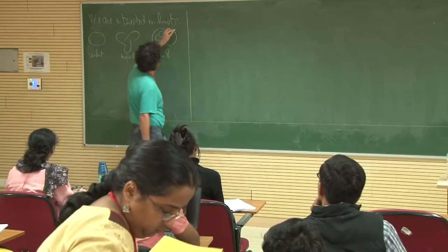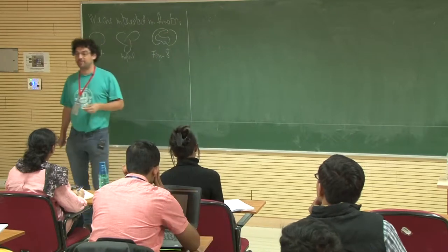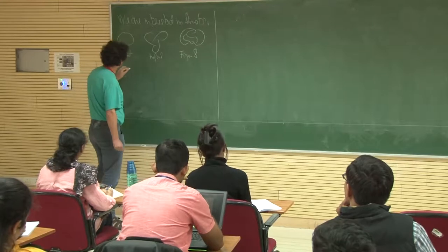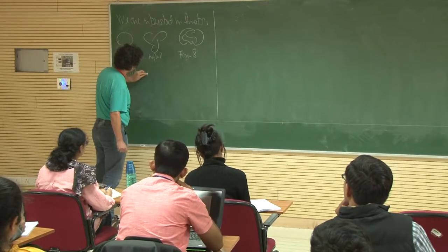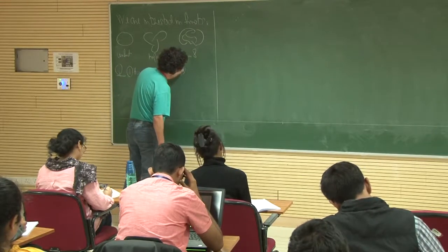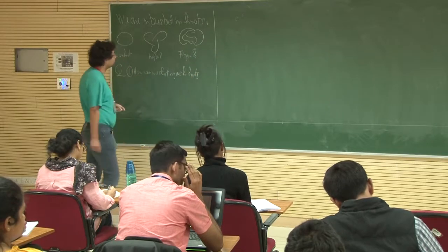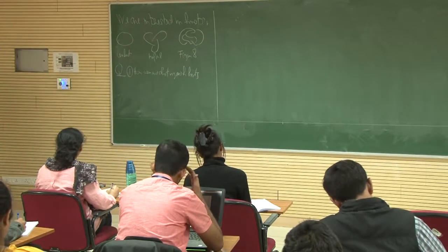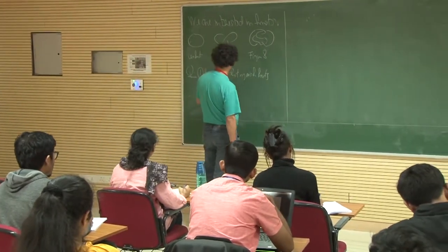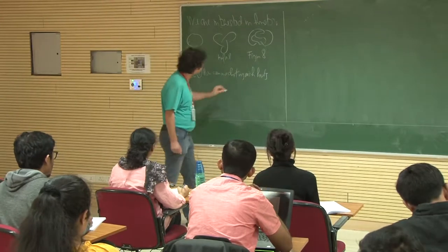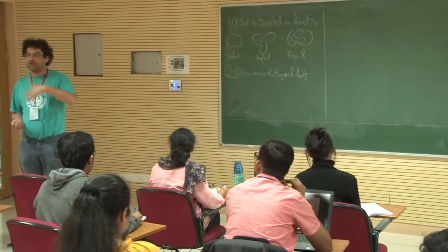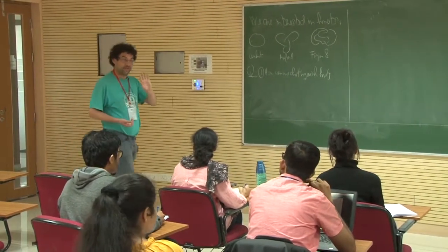What do we want to know? There are various questions we are interested in. So, how can we distinguish knots? For example, surely the trefoil is not the same as the figure-eight knot, but how do you show it? When you say 'distinguish', it depends a little bit on what you mean by two knots being the same. There are a couple of slight variations.